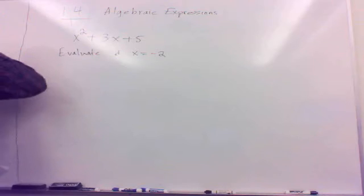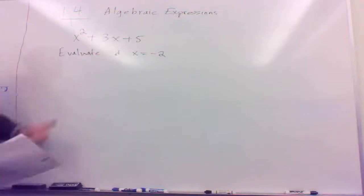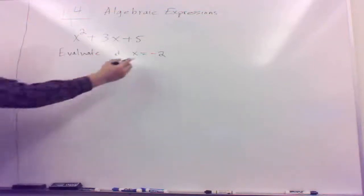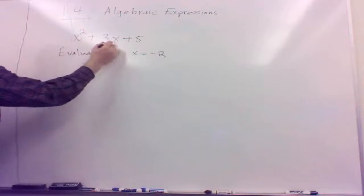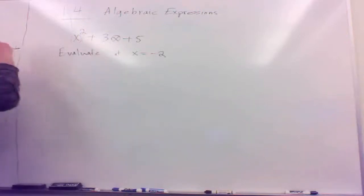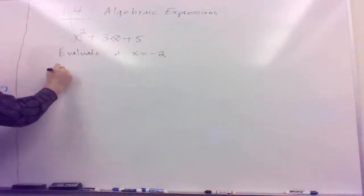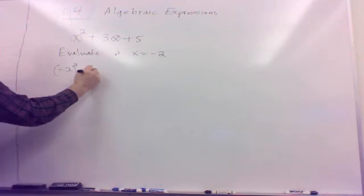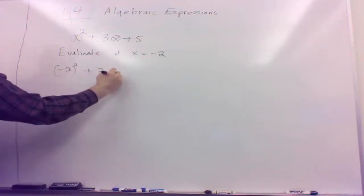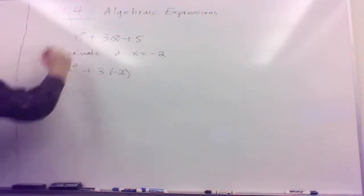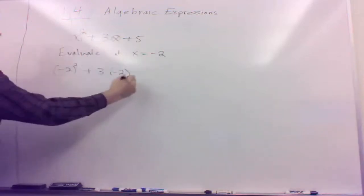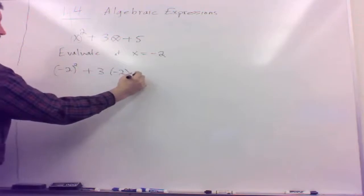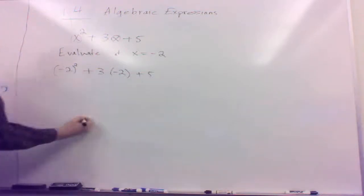x can be any number. We're just going to choose it to be negative 2 in this case, and of course what that means is wherever we see the x, I'm going to substitute my negative 2 value in there. So that's x squared, then 3 times x — which is negative 2 — plus 5.